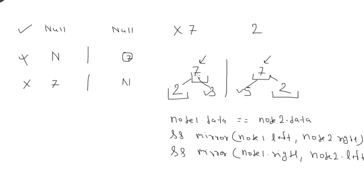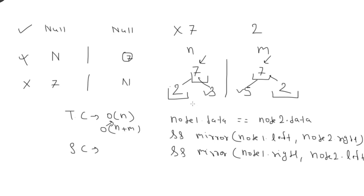This is how we solve the problem. For time complexity, since we iterate over all nodes once, the time complexity is O(n) — linear. If both trees have n and m elements respectively, it's O(n+m), but overall we say O(n). For space complexity, since we are not taking any extra space, it is O(1).